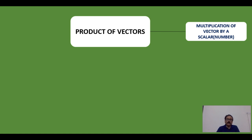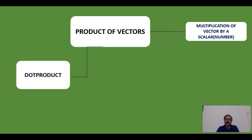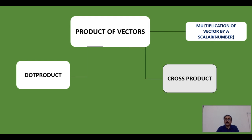You can basically classify the product of vectors into three. One is multiplication of vectors by a scalar. Second, the dot product. Third, the cross product. The dot product is also known as scalar product, and the cross product is also known as vector product. When two vectors are multiplied, sometimes we may get a scalar, other times we may get a vector. When the product of two vectors turns out to be a scalar, that product is called dot product; when it is again a vector, we call it cross product.